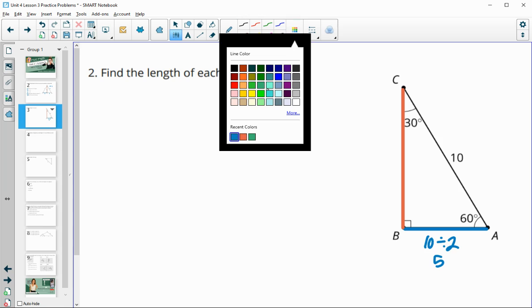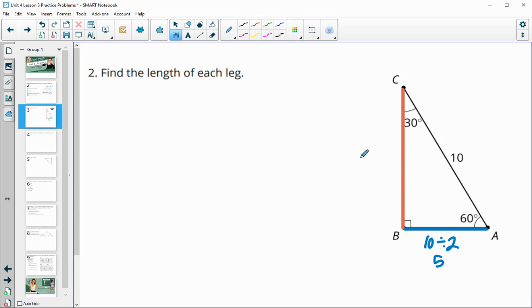And then the orange one is the blue one times the square root of 3. So 5 square root of 3.